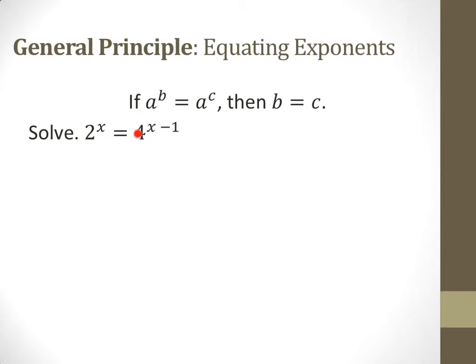2 and 4 have something in common. 4 is 2 squared, so let's rewrite the right-hand side. 2 to the x equals 4 is 2 squared, x minus 1, and it's a superpower, so we multiply in 2x minus 2.